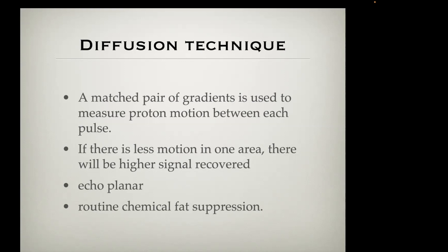One technical point: diffusion-weighted imaging is always performed with chemical fat suppression. So if you're looking at an MR scan and need to assess whether you're looking at fat or something else with a short T1 relaxation time like blood, you can use the diffusion scan for that purpose.